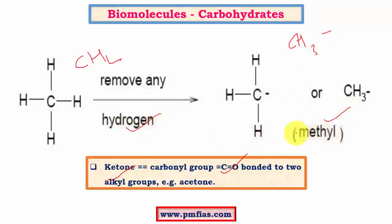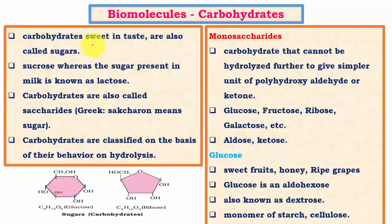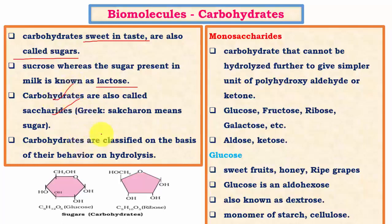Certain carbohydrates are sweet in taste and are called sugars — not all carbohydrates are sweet. Sucrose and lactose are examples of sugars. Carbohydrates are called saccharides, which in Greek means sugar. Carbohydrates were initially assumed to be hydrates of carbon, but later it was found that not all carbohydrates are hydrates. Carbohydrates are classified based on their behavior on hydrolysis — reaction with water — into monosaccharides, oligosaccharides, polysaccharides, etc.